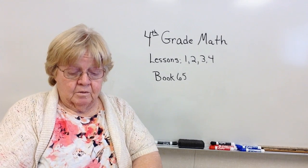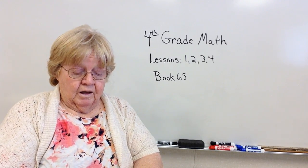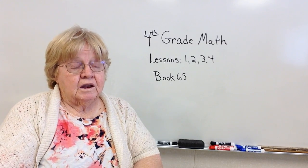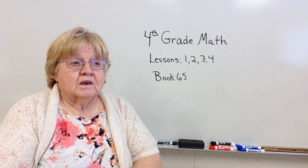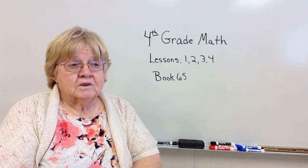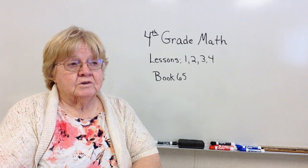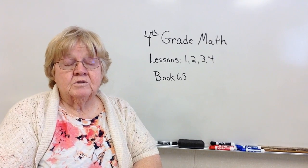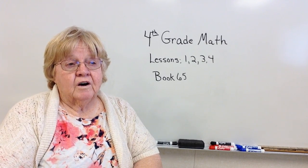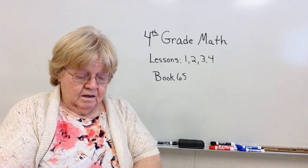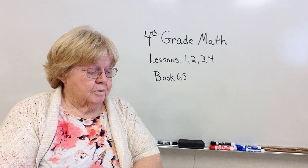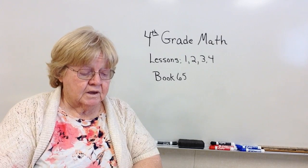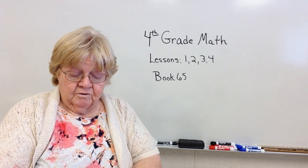Lesson two: even and odd numbers. I hope you don't have any trouble with even and odd numbers. An even number always ends in a multiple of two, such as 0, 2, 4, 6, 8. Odd numbers are 1, 3, 5, 7, and 9. I hope you don't have any trouble with that lesson. But once again, read it first.